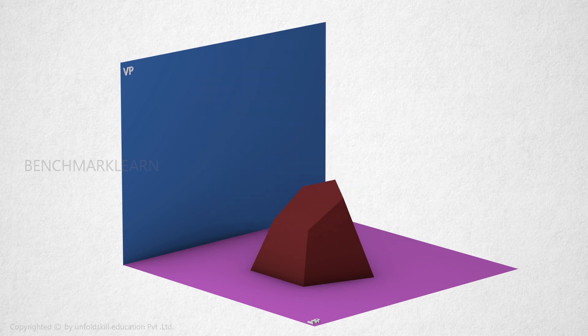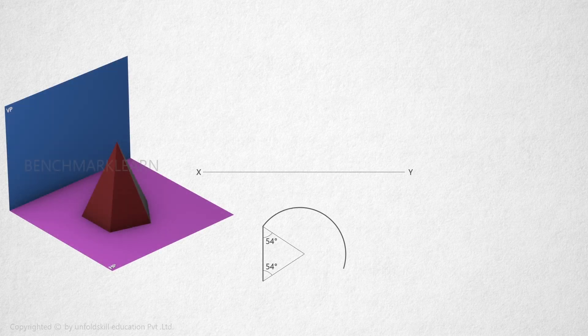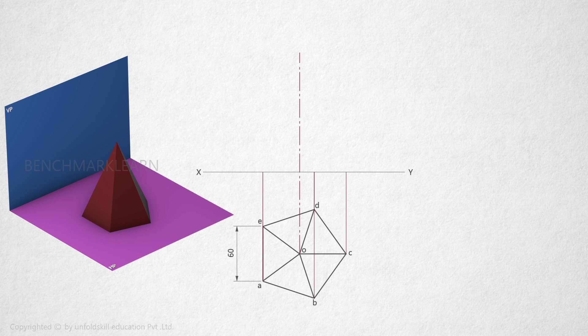Draw the orthographic view of the pyramid. Draw the top view of the pyramid with one of the sides perpendicular to VP. Name the bottom corners and top corners. Now project the top view to get the front view of the pyramid. Name the bottom corners and the apex.